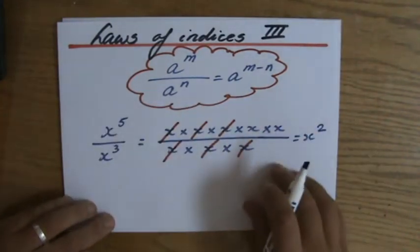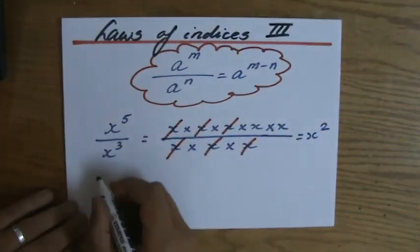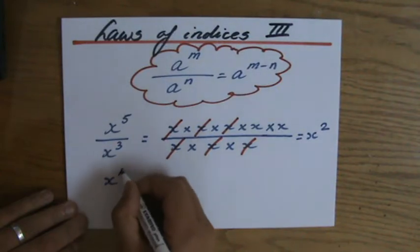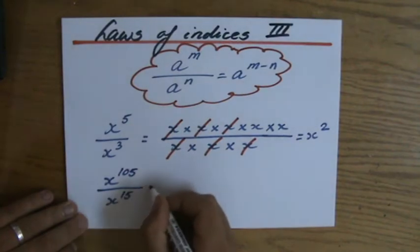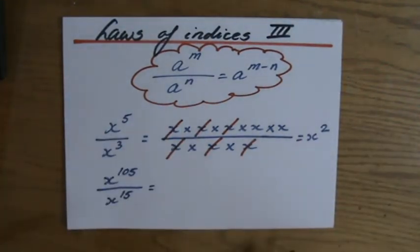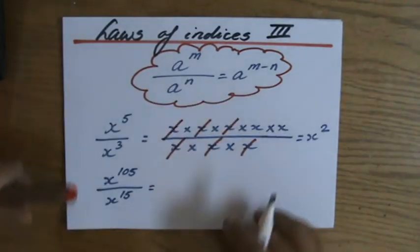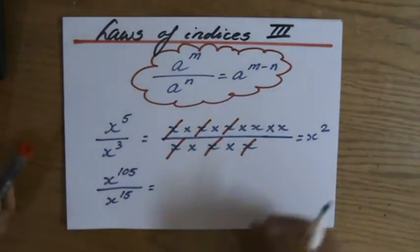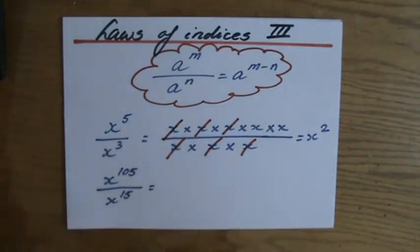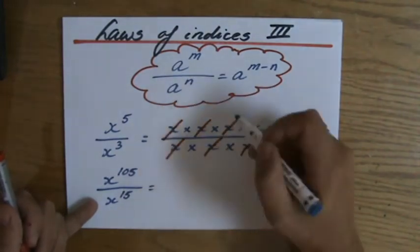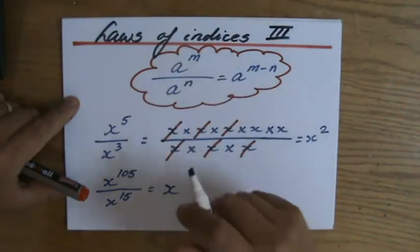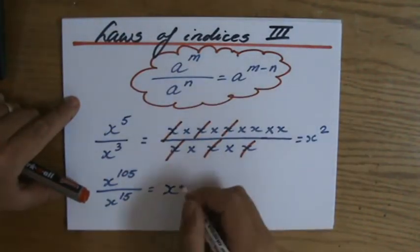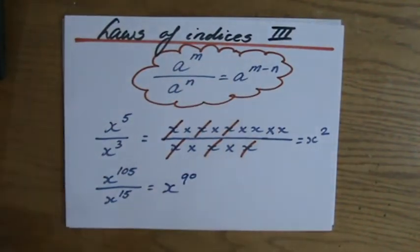Am I going to write this out every time? Of course not. Because if I have x to the power 105 divided by x to the power 15, am I going to write out x times x times x all the way? Of course not. The second law of the indices makes complete sense — the base is the same, so I subtract those indices, because I'm just getting rid of the common factors. So the answer here is x to the power 105 minus 15, which is 90.